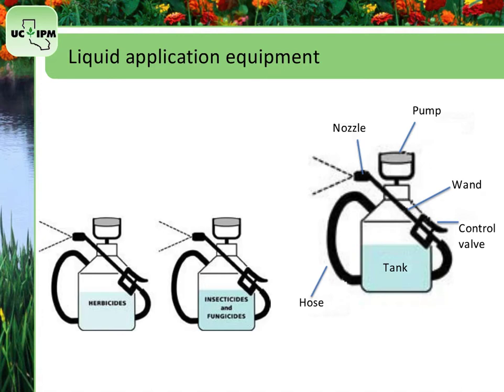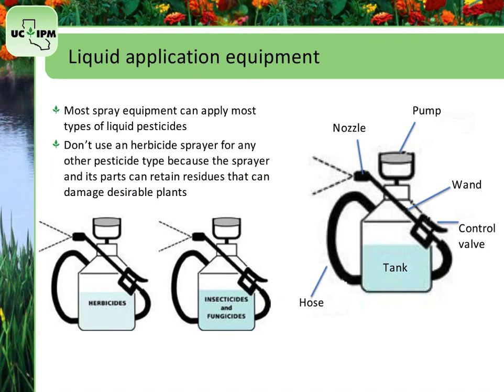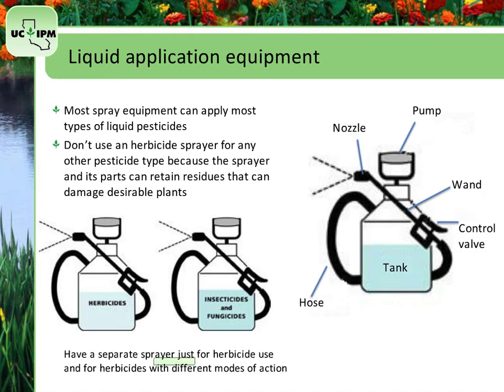Most spray equipment can apply most types of liquid pesticides. But don't use an herbicide sprayer for any other pesticide types. This is because the sprayer and all of its parts could retain residues that may damage desirable plants, even after the equipment is thoroughly cleaned after each use. It's best to have a separate sprayer just for herbicide use. You should also use separate sprayers for herbicides with different modes of action, for example, broad spectrum and more selective herbicides, so that you can avoid any unintended consequences on plants that are treated.